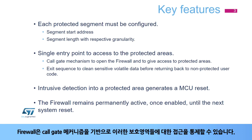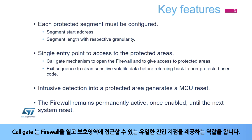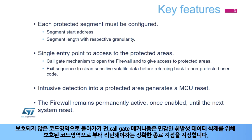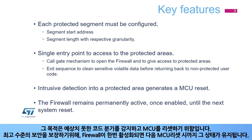The firewall is based on a call gate mechanism used to open the access to these protected segments. The call gate function is the single entry point able to open the firewall and enable access to the protected segments. To ensure sensitive volatile data is erased before returning back to non-protected user code, the call gate mechanism specifies the exact exit point when jumping back from the protected code segment. The goal is to detect any non-expected code branches and to react by resetting the MCU.